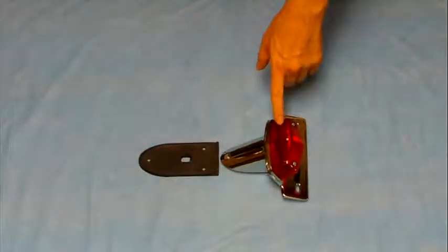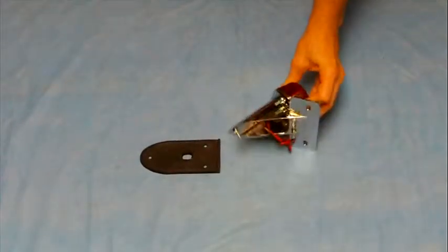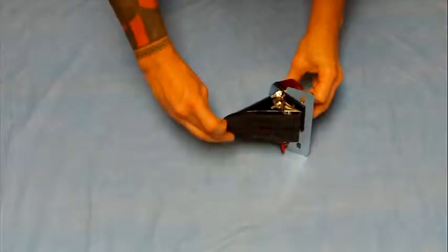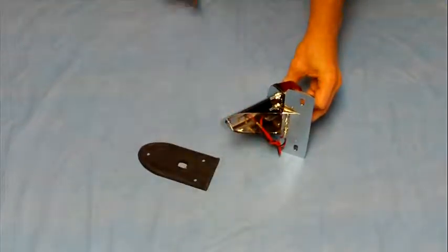This is our standard Lucas style tail light. This will basically mount to a fender. It's got the rubber mount here with a hole so you can run the wire through your fender.